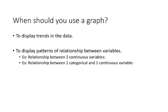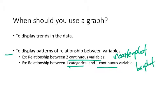In contrast, you should use a graph if you're interested in displaying trends in the data. For instance, if you want to display patterns of relationships between two different variables. One example of that might be if you want to show a relationship between two continuous variables. And if you have two continuous variables, what specific type of graph should you use? Right, hopefully you remembered that that would be a scatter plot. And if you want to show a relationship where you have one categorical and one continuous variable, what kind of graph would be appropriate? Right, a bar plot.